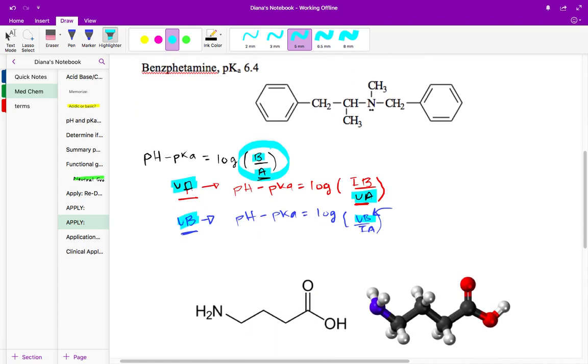So this is the formula you want to keep in mind right here. This is the Henderson-Hasselbalch formula. pH minus pKa is equal to log of base over acid. As long as you remember that base is on top and acid is on the bottom, that's good. But it depends on what you're starting with.